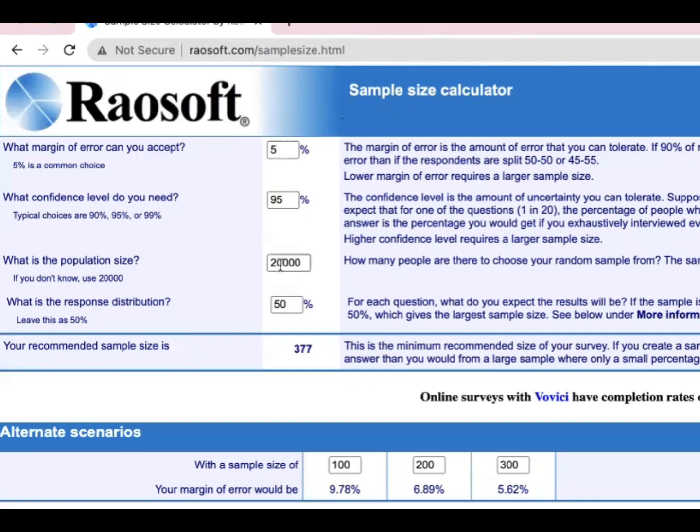And then this is the population size. If known, if you have already the number of total population and then you are finding the sample size, you can use this one. You can just change this.